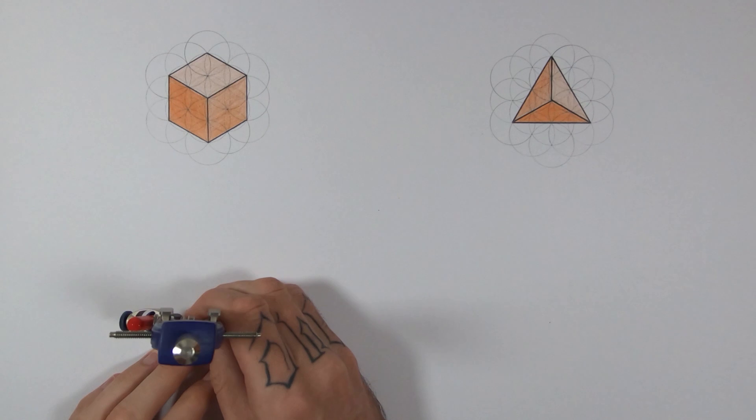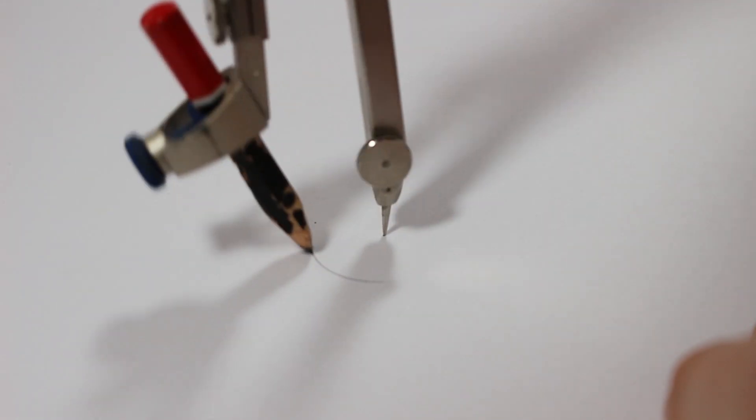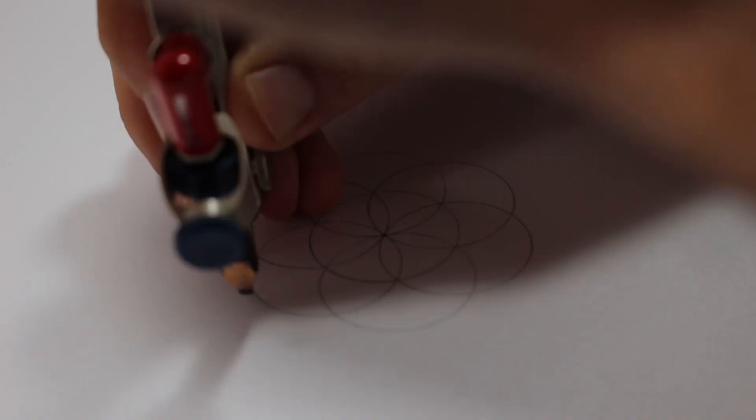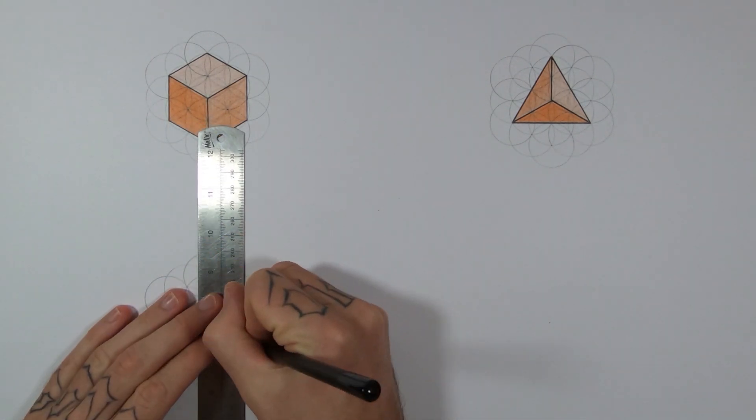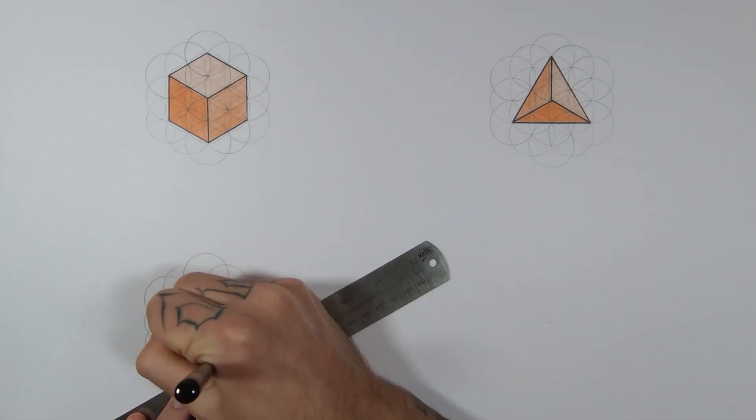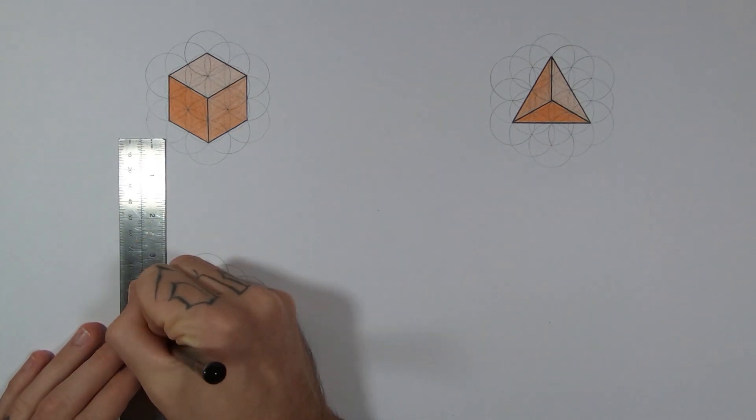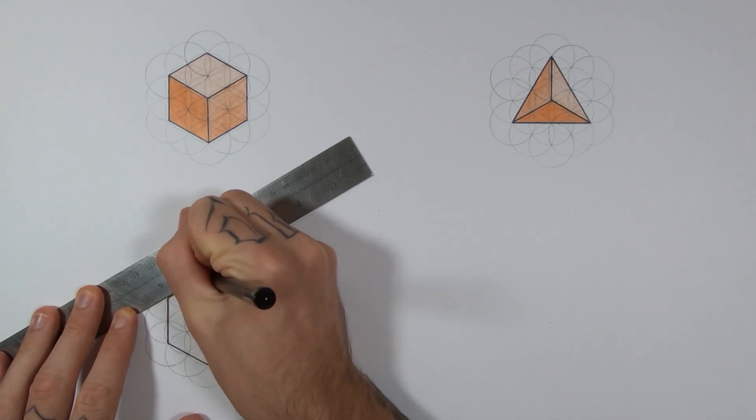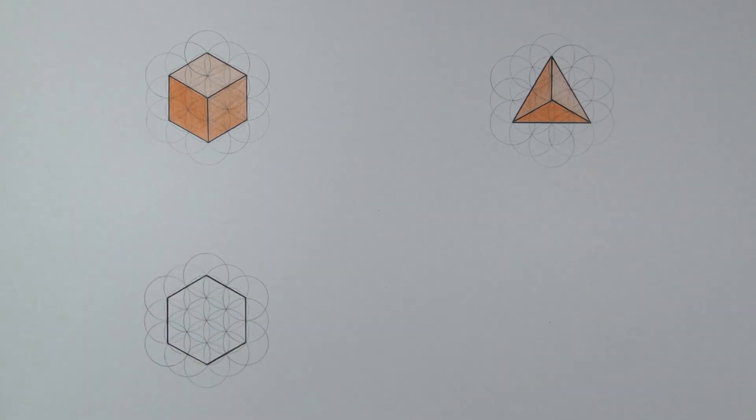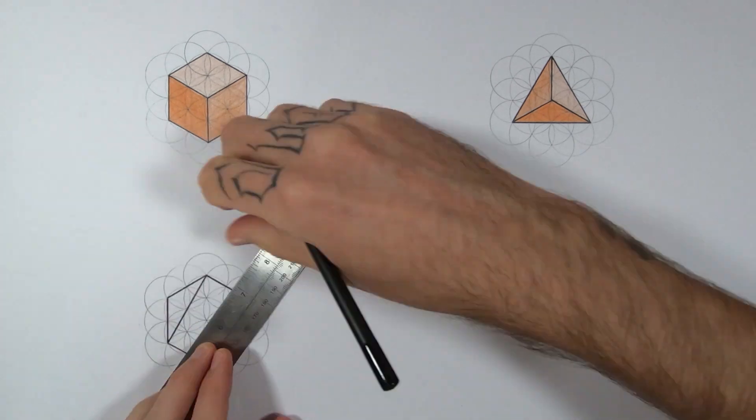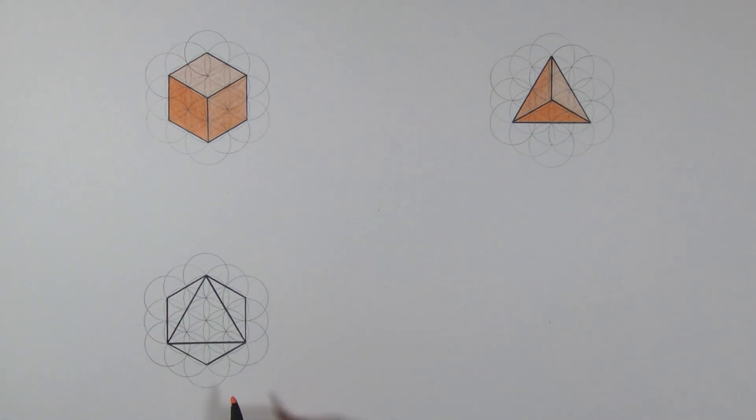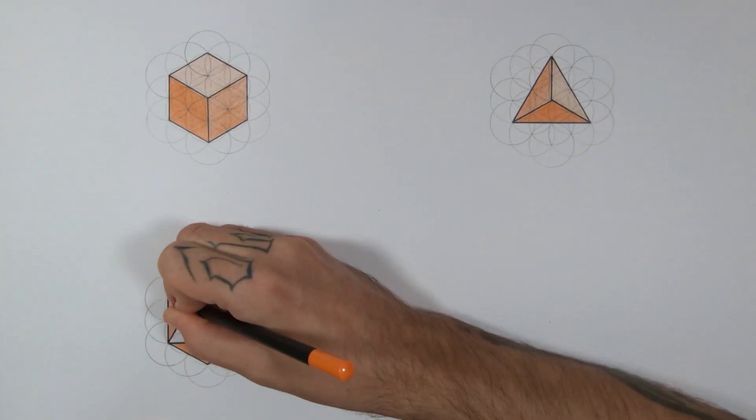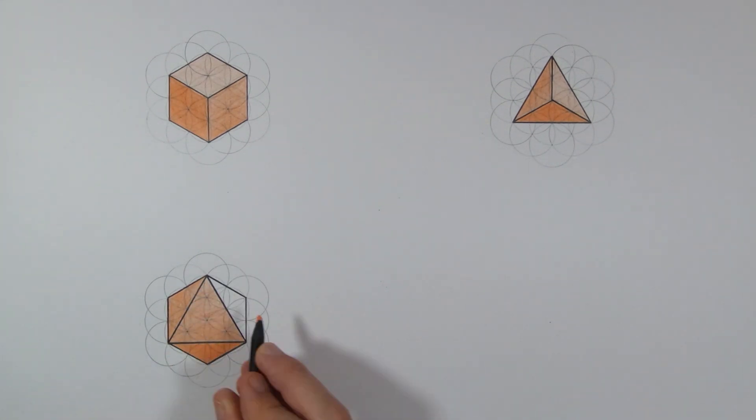Alright, next the octahedron. Again, flower of life, 19 circles. This time we're going to draw the hexagon exactly the same way we did before, and then we're going to draw the triangle the exact same way that we did before. That's it, the hexagon and the triangle combined give you the octahedron.